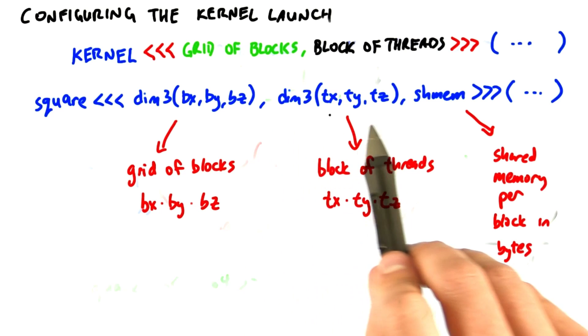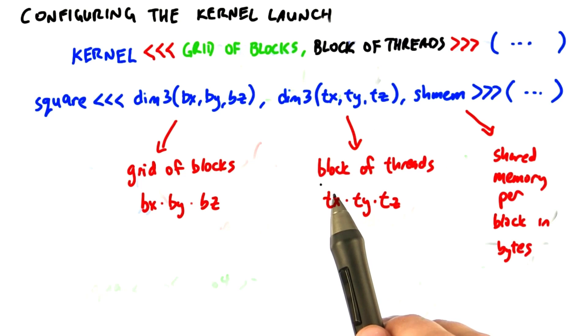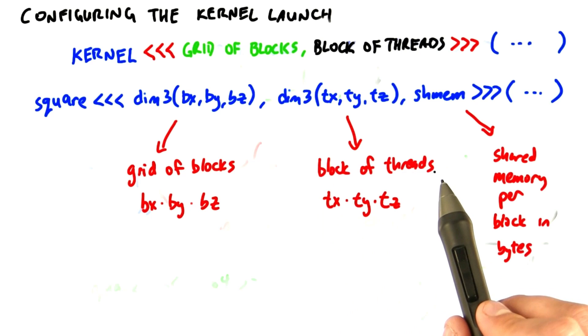Each one of those blocks is specified by this parameter, the block of threads. That has tx times ty times tz threads in it. Recall that this has a maximum size.